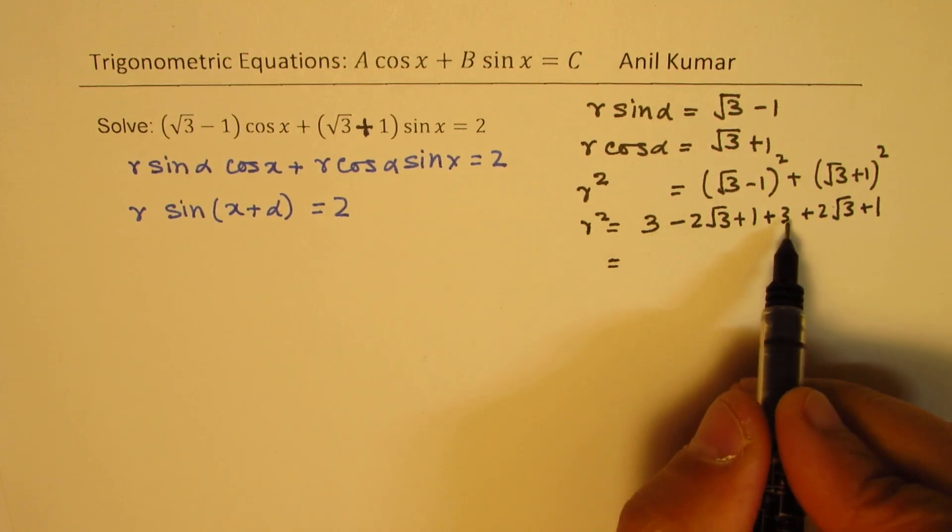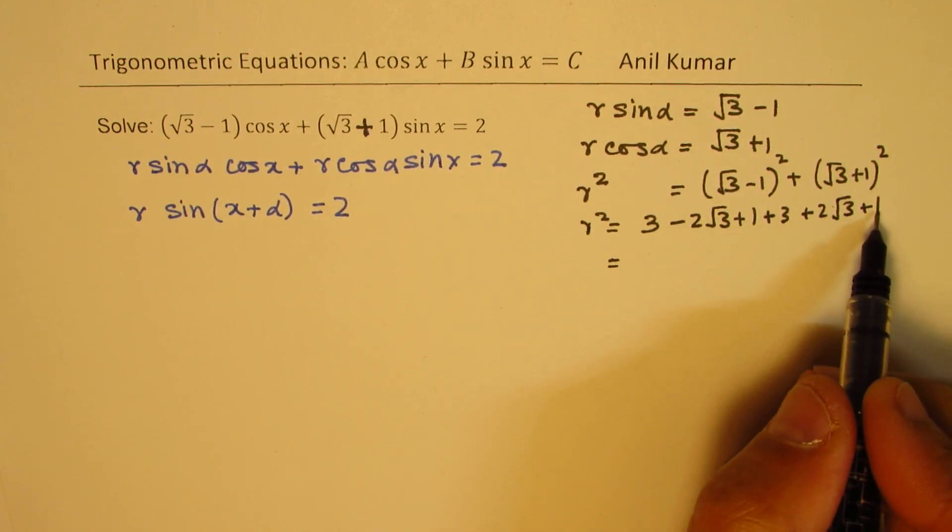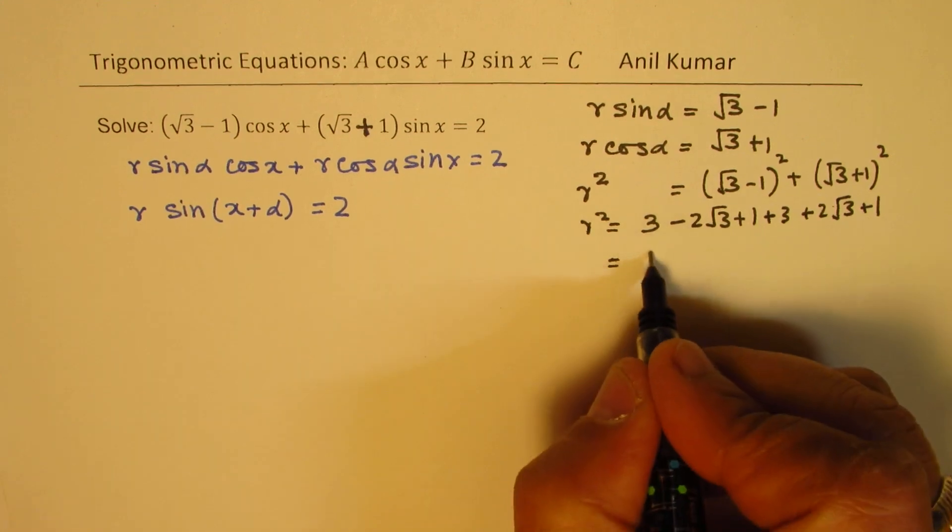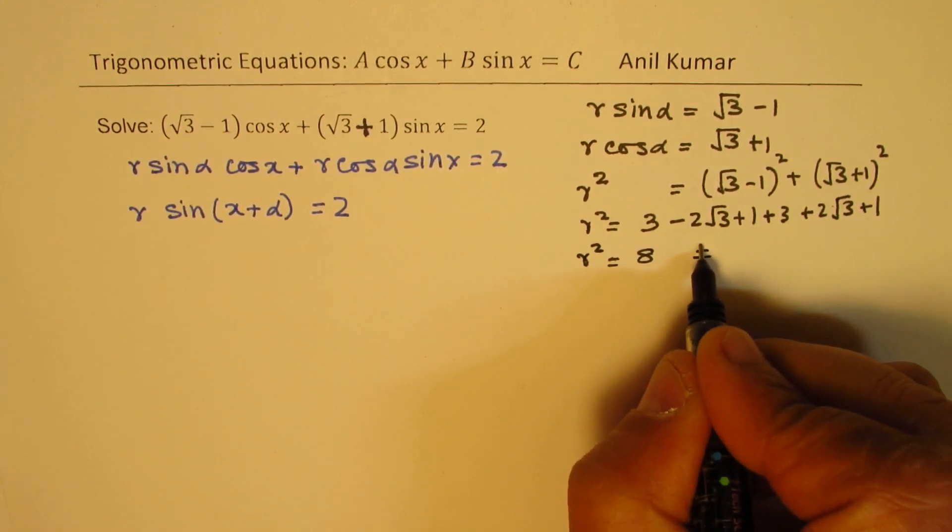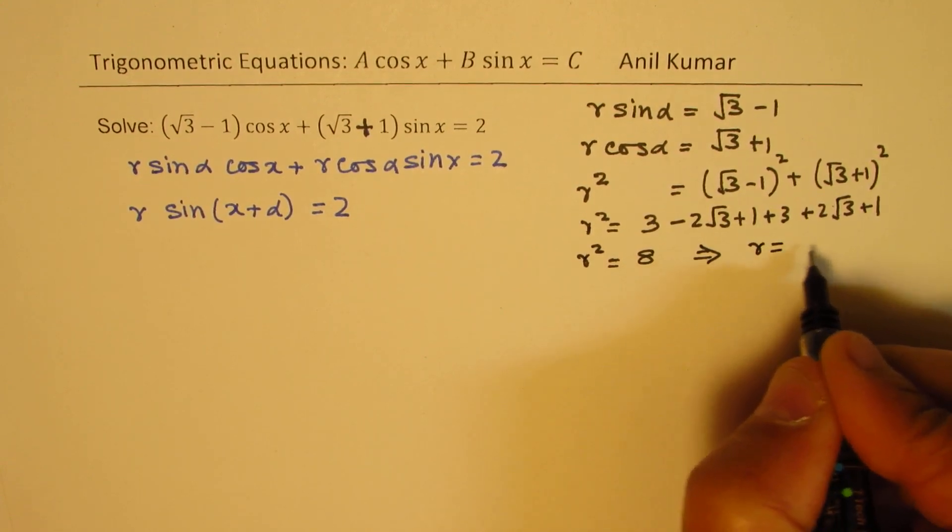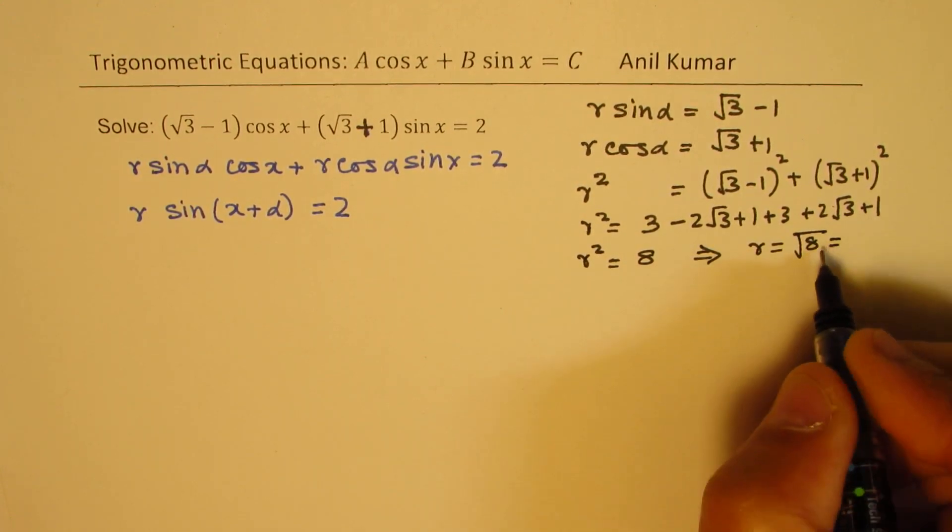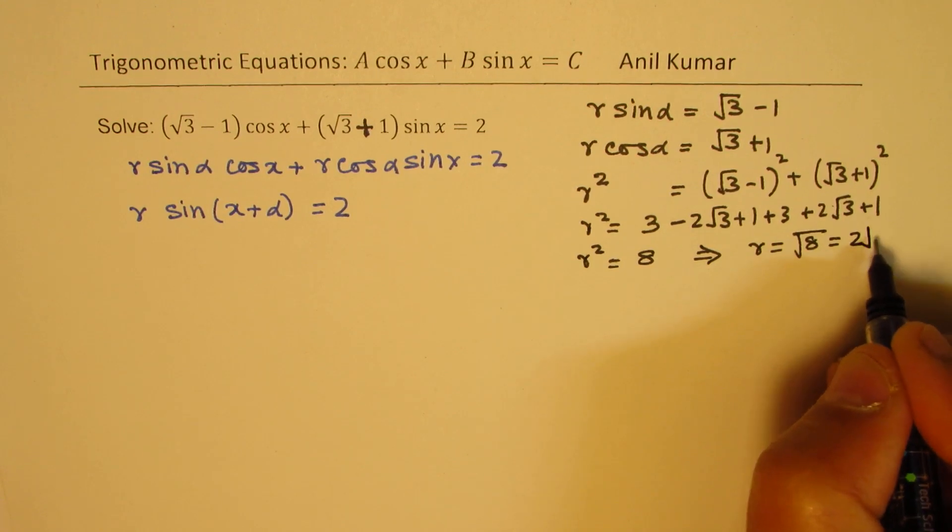These two terms cancel, we get 3 plus 3 as 6 and 1 plus 1. So r square is 8, and that gives you r as square root of 8, which is 4 times 2, so 2 square root of 2.